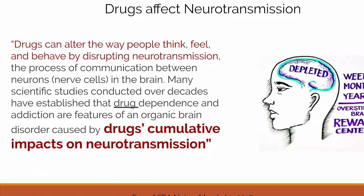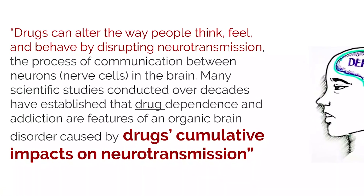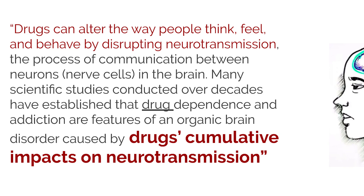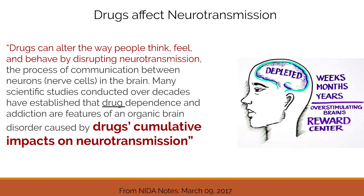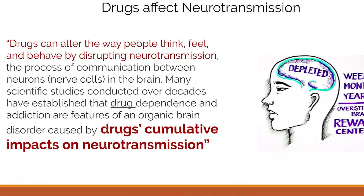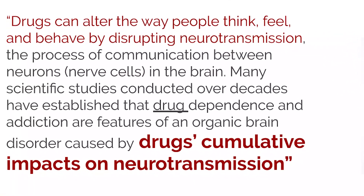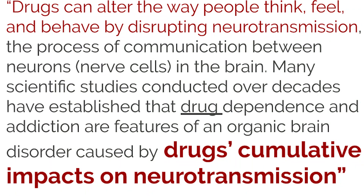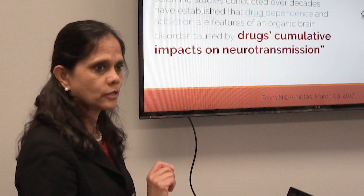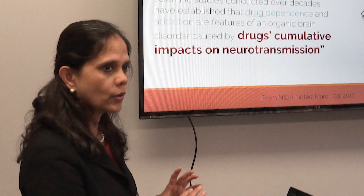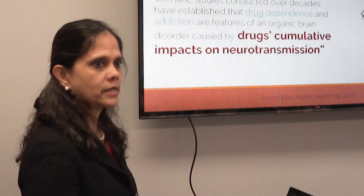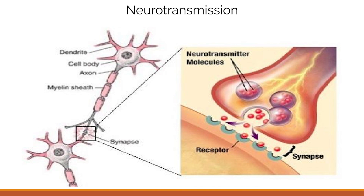What are the brain mechanisms that affect addiction? Drugs alter the way people think, feel, and behave by disrupting neurotransmission. It affects the communication between the nerve cells in the brain. A direct quote from NIDA: many scientific studies conducted over decades have established that drug dependence and addiction are features of an organic brain disorder caused by the drug's effect on neurotransmission. So they are now calling drug addiction a brain-based disorder.